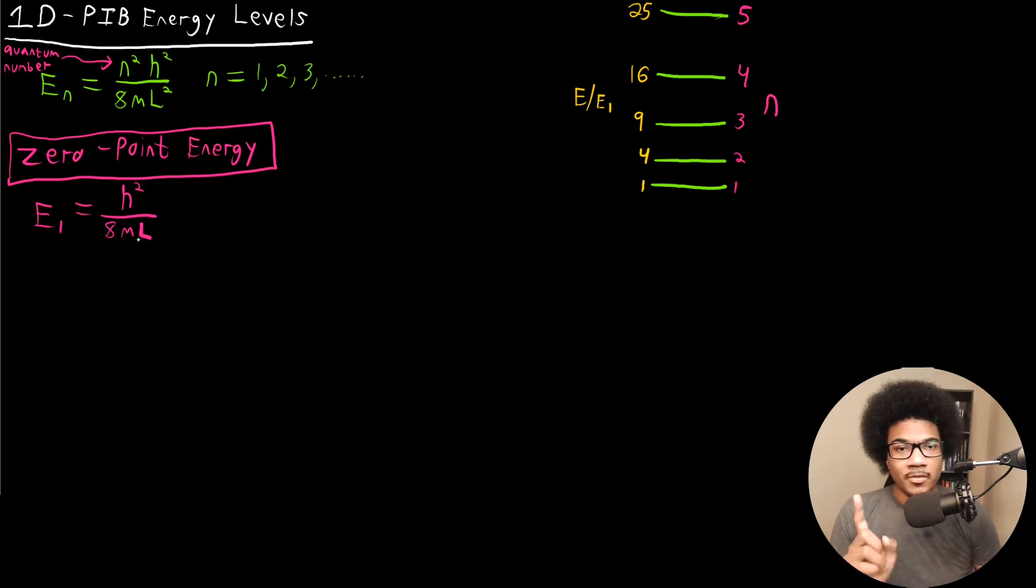We'll come back to that point of the zero point energy in just a second. What I want to do is turn your attention to this diagram here. Basically, I just kind of sketched out the different energy levels for the one-dimensional particle in the box. On the left side, we have the current energy over the zero point energy E1, so the lowest energy would be one and everything else is scaled based on that.